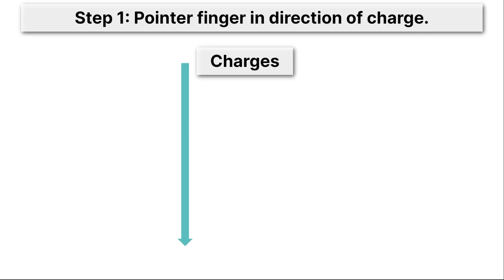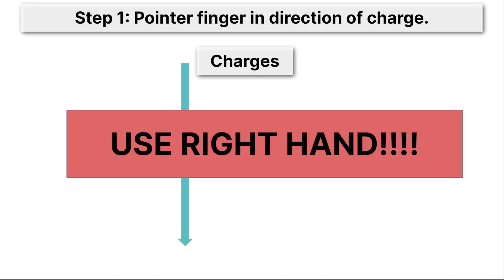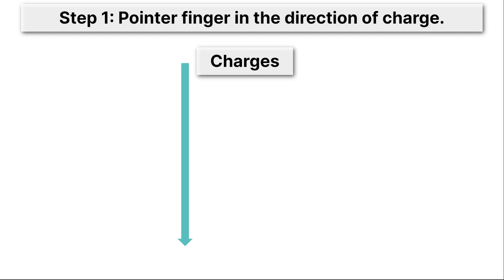Let's take a look at an example where we have charges moving from the top of the screen to the bottom. Step one in using your right-hand rule is point your finger, your pointer finger, in the direction of the charges. Now just remember, use your right hand. If you use your left hand, you'll get the opposite and wrong answer. So make sure you're using your right hand. And what should be happening now is your pointer finger should be pointing down.